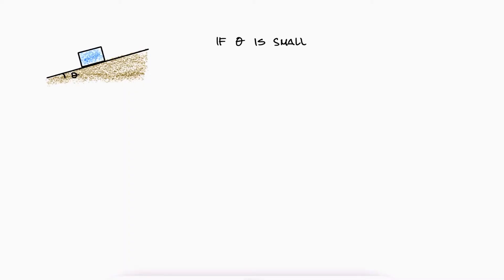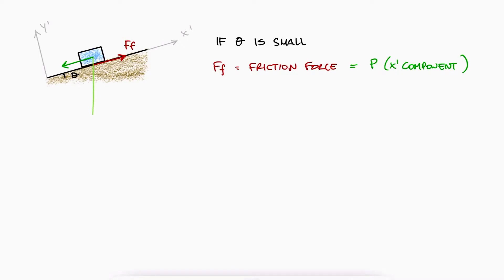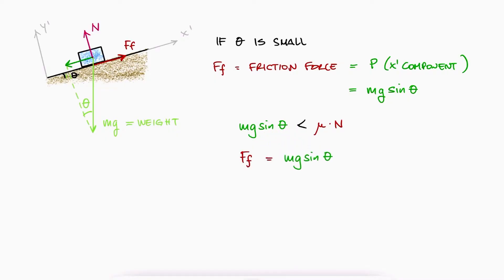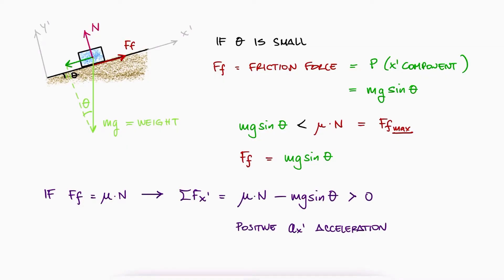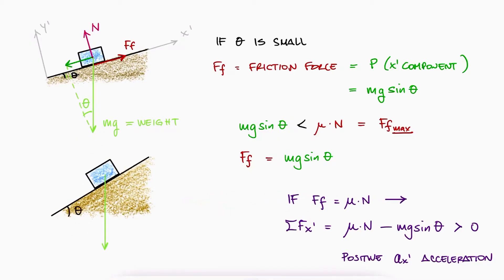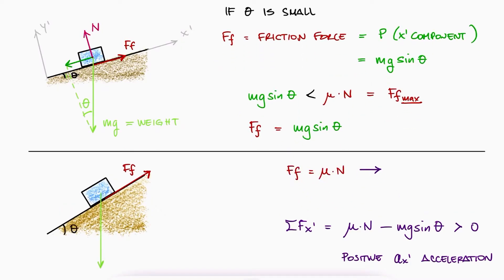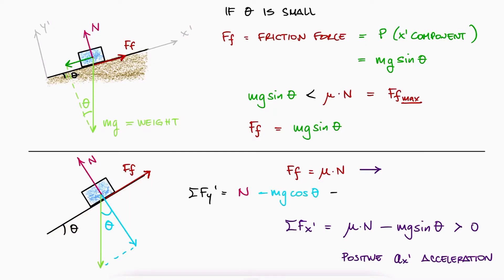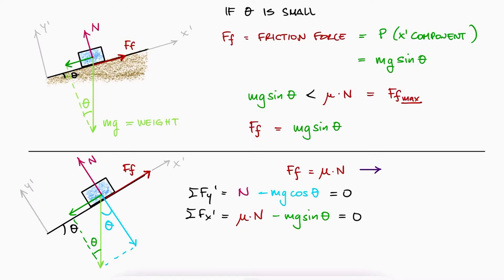This is similar to what happens to a box on a slope. If the inclination angle is not too steep, the friction force will only be equal to the external force parallel to the surface. For any case of a box on a slope, this external force parallel to the surface is the component of the weight in the direction of the surface. If this force is lower than mu times N, then the friction force is only equal to the magnitude of the weight's component. Mu·N is only the maximum friction force. If we keep increasing the angle of the slope, we will reach a point where the friction force reaches its maximum value mu times N, and we can write the sum of forces in the y' and x' directions to find a relationship between the angle and the static friction coefficient mu sub s.